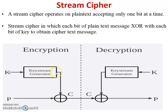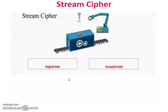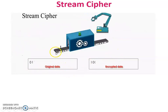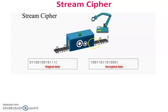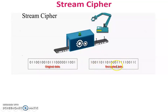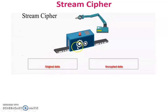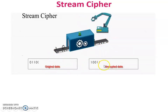This is the key stream generator — it generates key bit by bit. Now this is the animation of stream cipher. At a time, one bit is the input, the key is given, and the output is also one bit at a time. This is the original data and this is the encrypted, or cipher text, data. Input is bit by bit and output is also bit by bit.